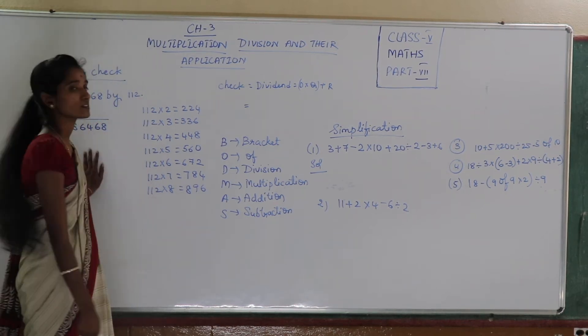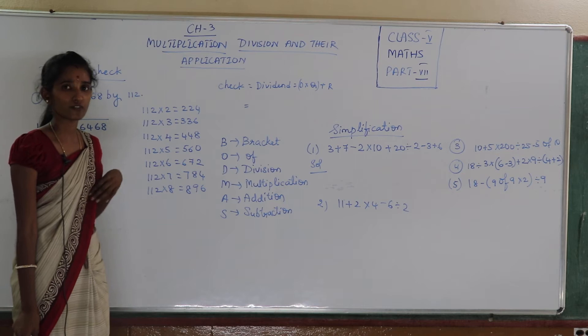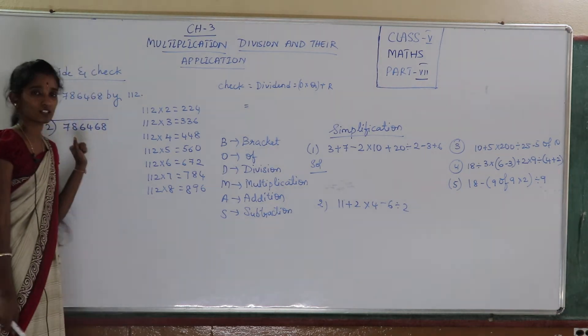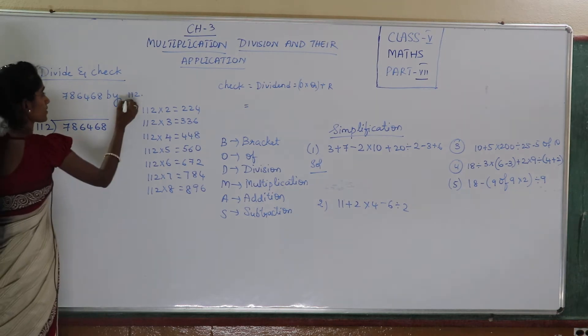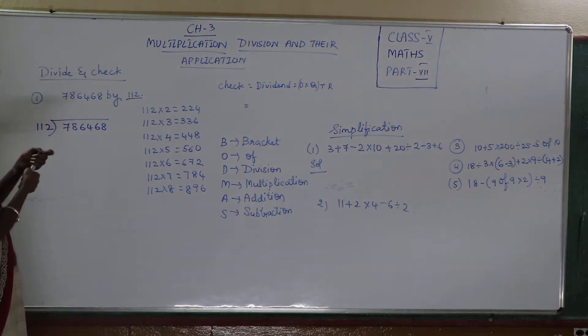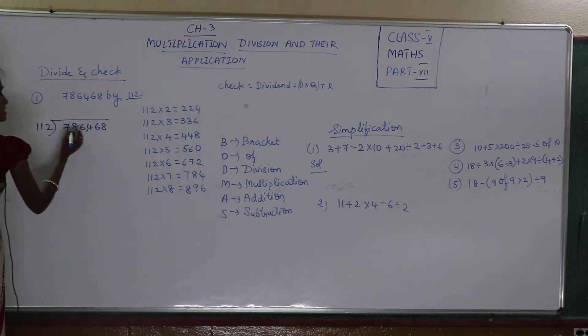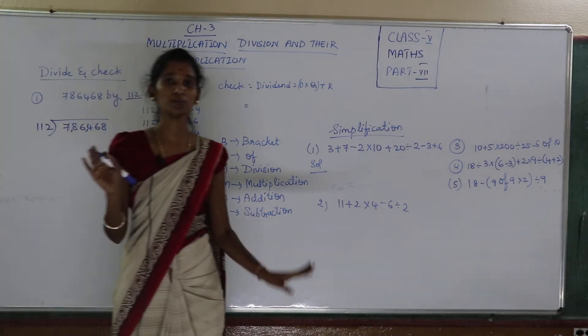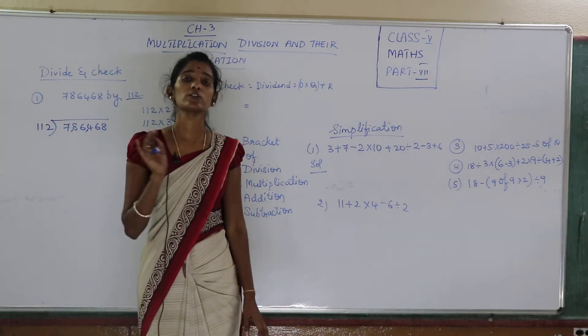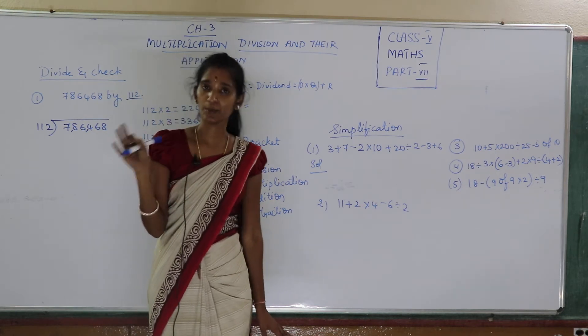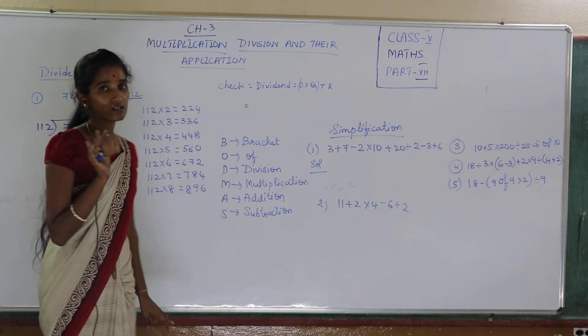Now children, we are going to learn divide and check, the traditional check which we have already learned, but this is three digits division we are going to learn and check. Now, he gave me this 786468. Children don't get worried whether it is a big number or small number, we should think it is just a number, a simple number, so that we can play with the numbers.